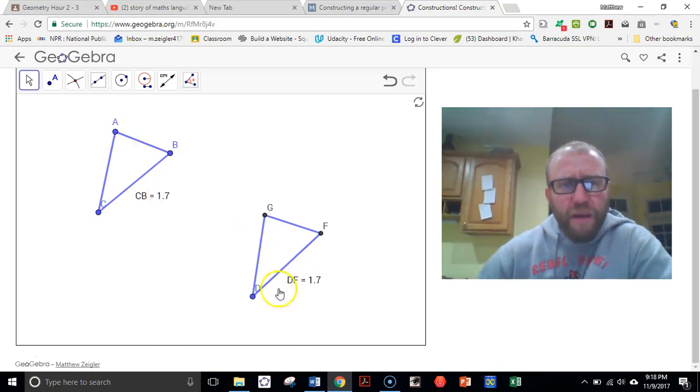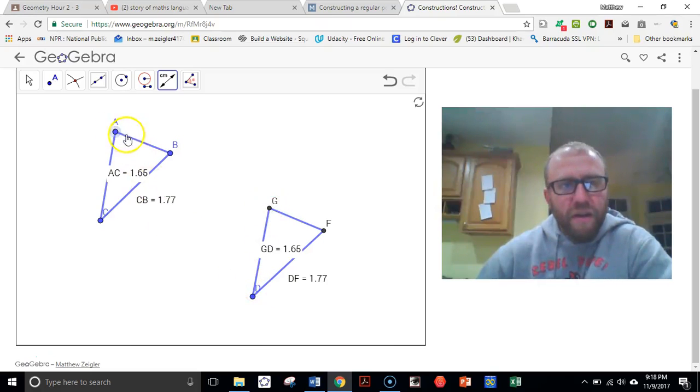But let's just make sure that they're the same. We know this side matches that side. Right? We can see that. Let's mark the other two. AC is 1.65. And GD, 1.65. AB is 1.07. And GF is 1.07.